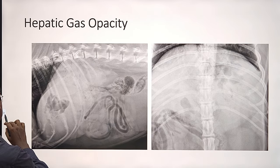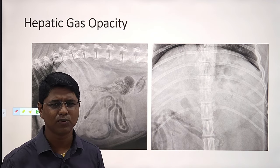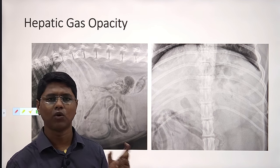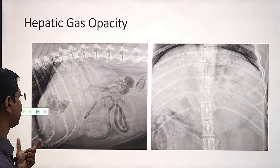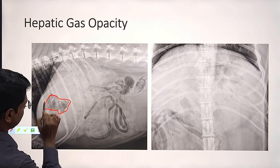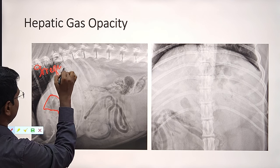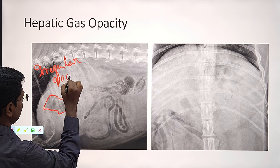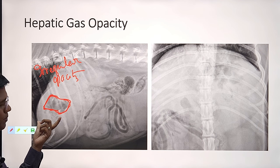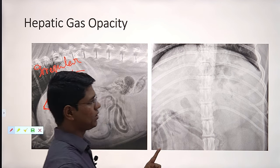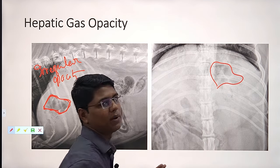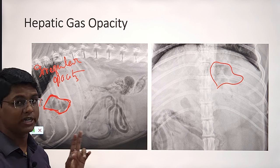Next is hepatic gas opacity. Hepatic gas opacity is present when there will be hepatic abscess or tumor with central area of necrosis. But they are best diagnosed by ultrasonography. Many times they are confused with stomach gases. This is a case of irregular gas opacity of the liver — a case of abscess. They can be seen in the dorsal ventral view, but are better evaluated by ultrasonography.